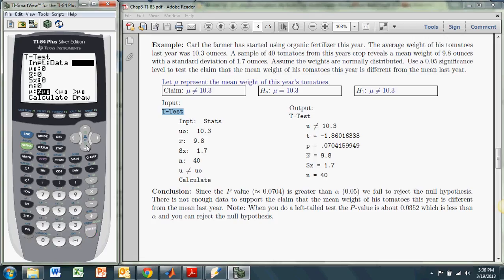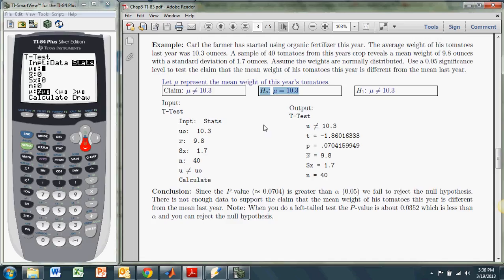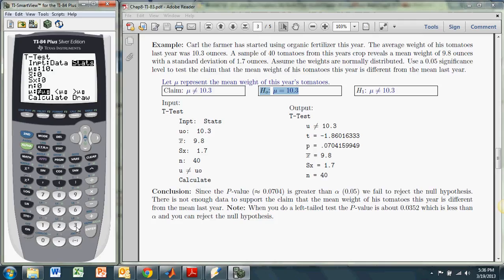And the next thing it asks for is the mean from the null hypothesis, the presumed mean, mu sub-naught. So that comes from right here. So the mean from the null hypothesis is 10.3. And the next thing it wants is the sample mean. And the sample mean is the sample of 40 from this year, and that's 9.8.